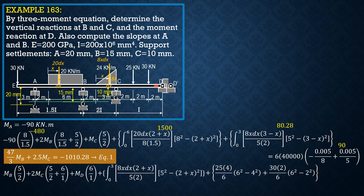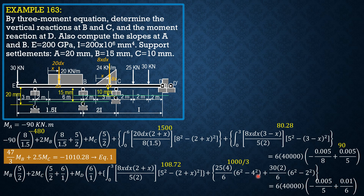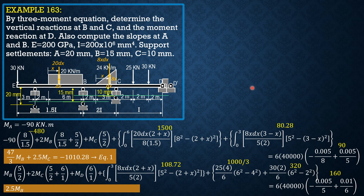This equals 6 times 40,000. Drawing the horizontal line through C as our reference, δB is negative 5 mm and δD is positive 10 mm. So this equals 6 times 40,000 times quantity negative 0.005 over 5 plus 0.01 over 6. Simplifying: the integral value is 108.72, the next term is 1,000 over 3, this value is 320, and the right side is 160. Setting up the second equation: 2.5 MB plus 17 MC plus 6 MD equals negative 45 and 154 over 75. Call that Equation 2.